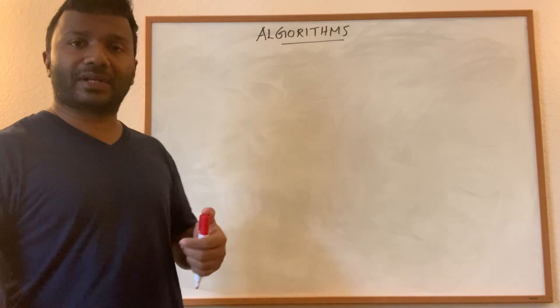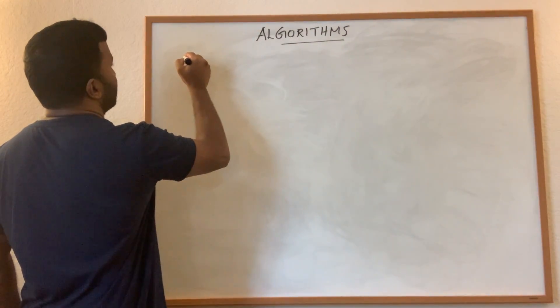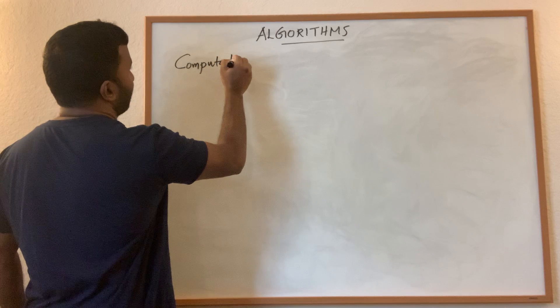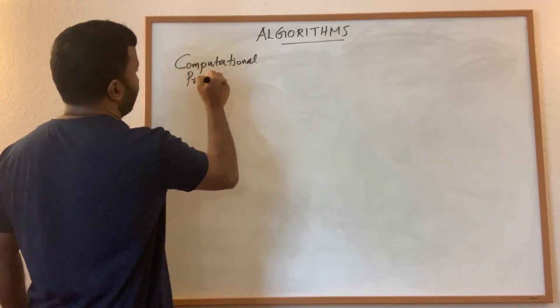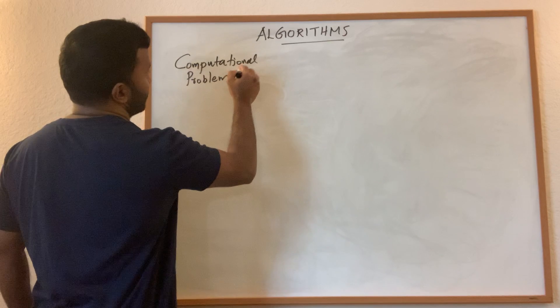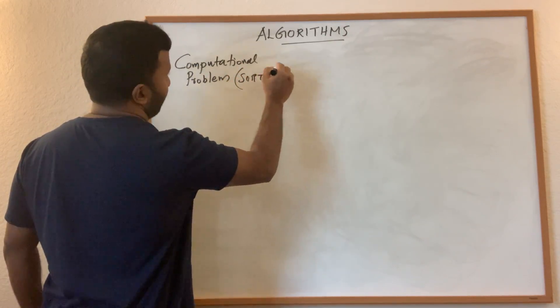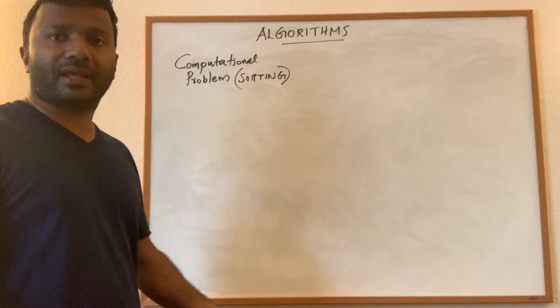Let's pick an example and try to illustrate the different things. So you are given a computational problem, for example sorting. And the problem is going to have an input and an output.